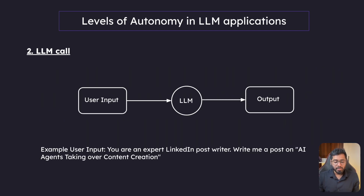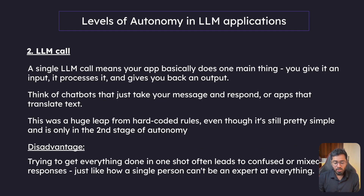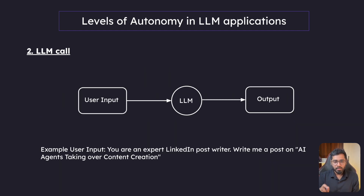Here is a simple diagram. The user inputs something to the LLM in the middle, and then it gives out an output. An example user input could be: 'You are an expert LinkedIn post writer, write me a post on AI agents taking over content creation.' The user gives just one prompt — one particular task — and the LLM is pretty good at doing that one thing.